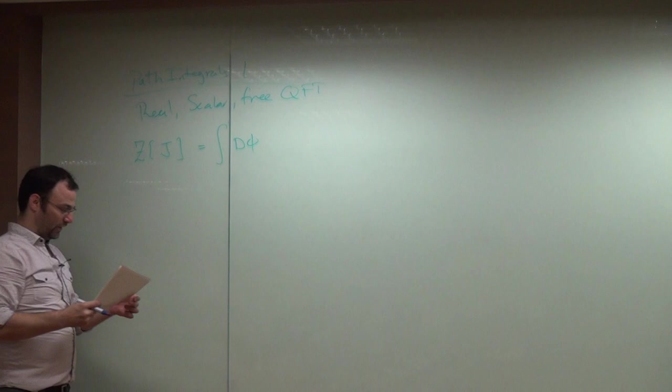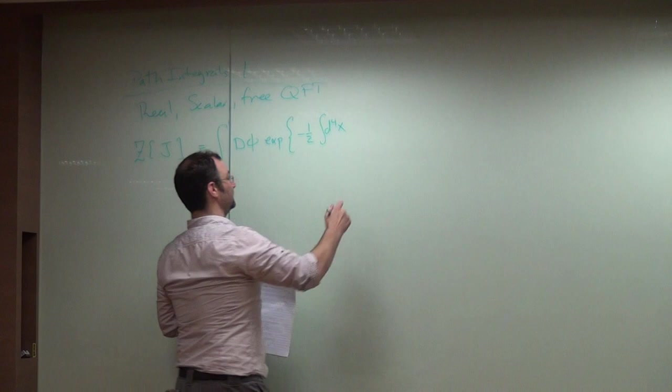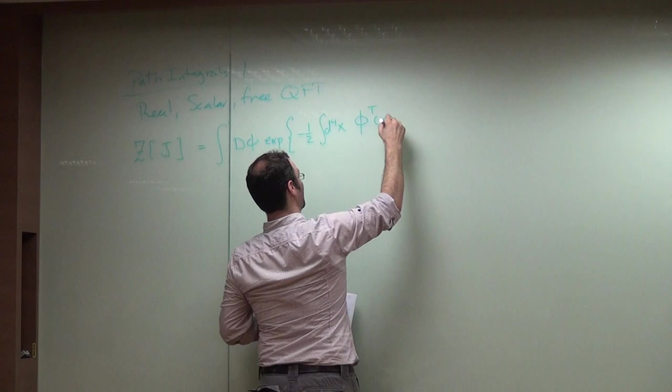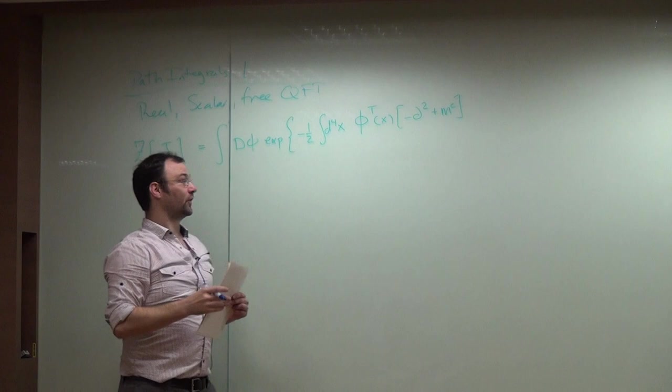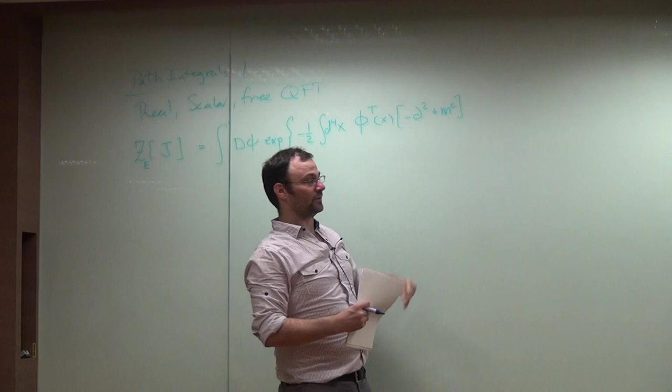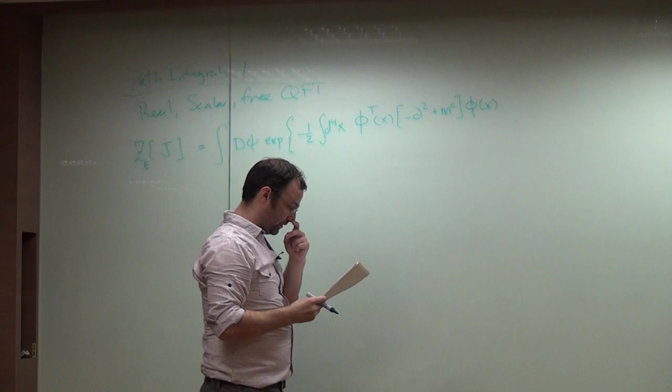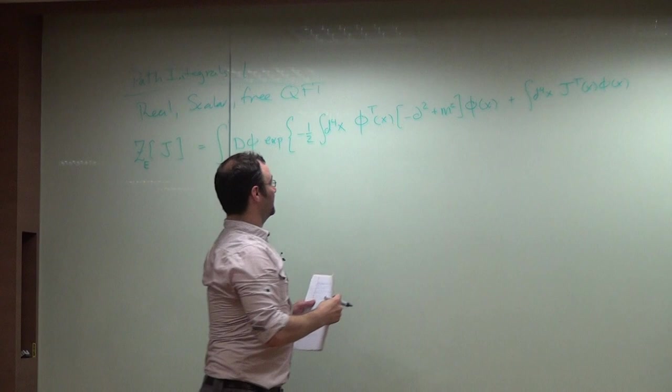So recall the path integral. And recall, if you are familiar, you can define the path integral with sources that you can use to compute the correlation functions. So again, this is given by this integral over all field configurations. And then we have the exponential. Here we're going to have minus a half d^4x. Now I'm going to write this a little different than you're probably used to, just to help set the notation. So here we're going to take, we're just going to call it the transpose field, phi transpose. Our operator, if you recall, is d squared plus m squared. The minus sign comes, well first of all, I'm in Euclidean space. I'm going to drop the label e, but we're always in Euclidean space from now on. And then when you do the partial integration, you pick up this minus d squared, if you recall, phi of x.